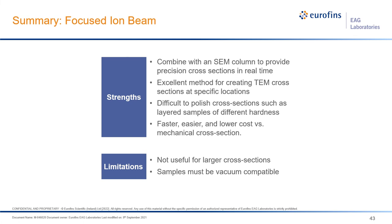Limitations of FIB: not useful for larger cross-sections. Typical dimensions are 20 microns wide and 10 microns deep, though we can go larger and deeper — time is money. The newest next-generation focused ion beams have capabilities for larger cross-sectioning using xenon gas instead of gallium. Samples must also be vacuum compatible.